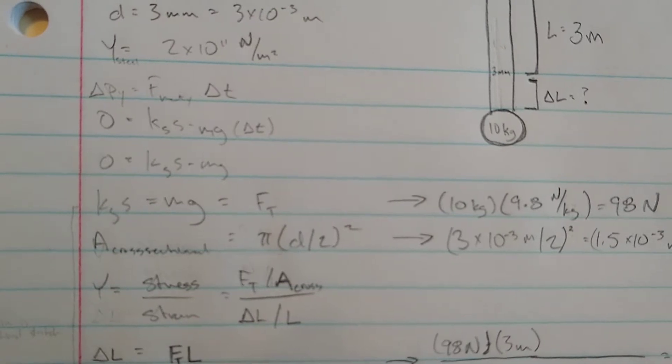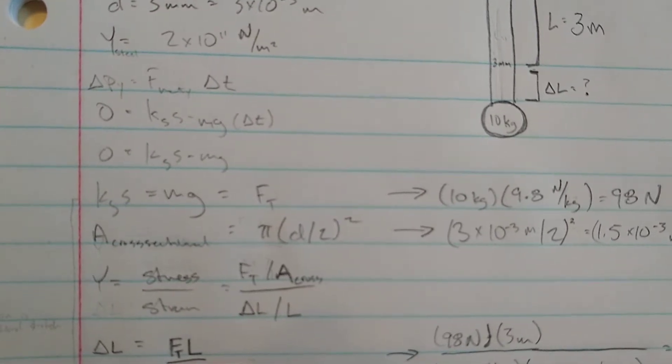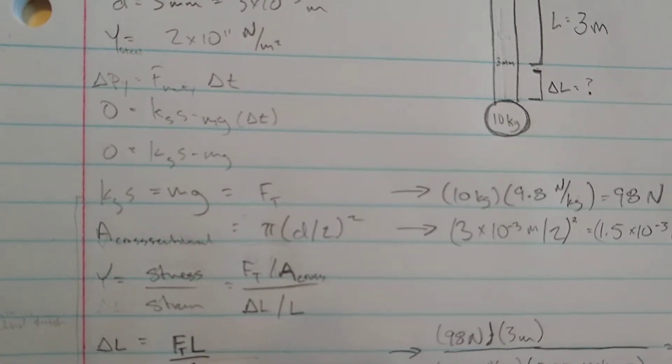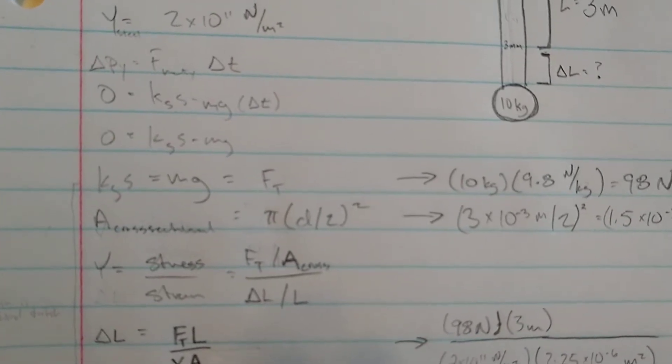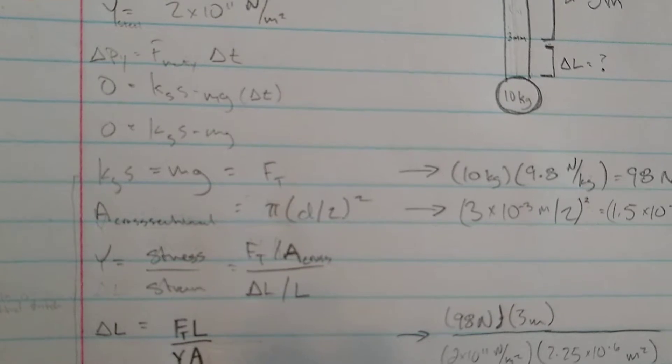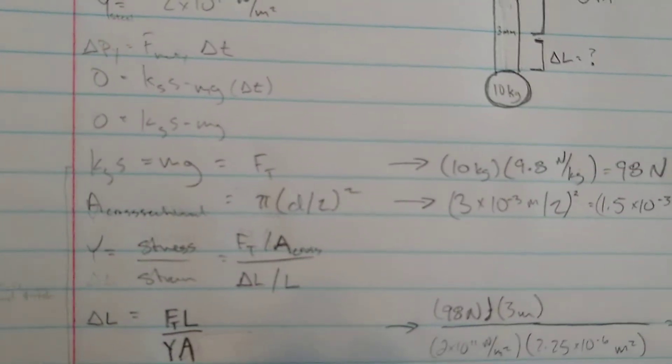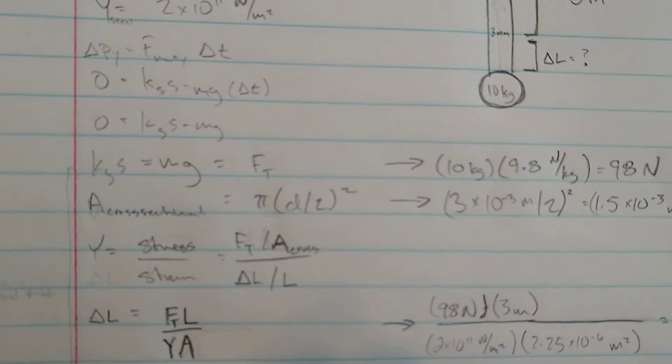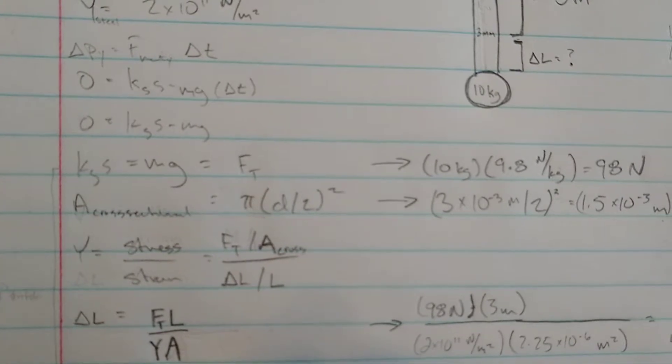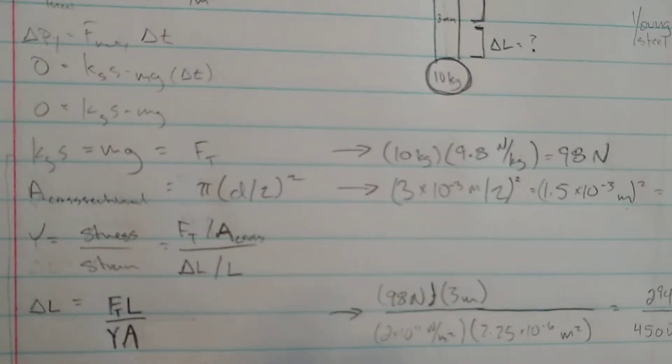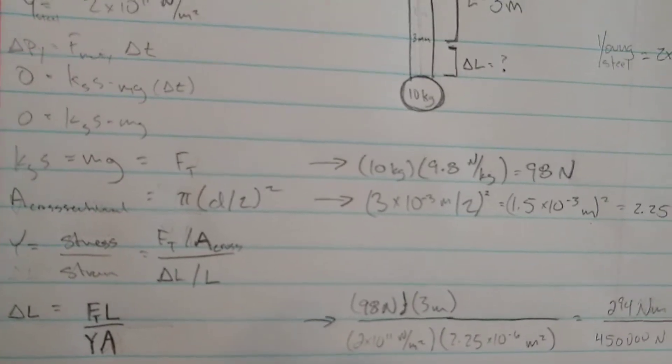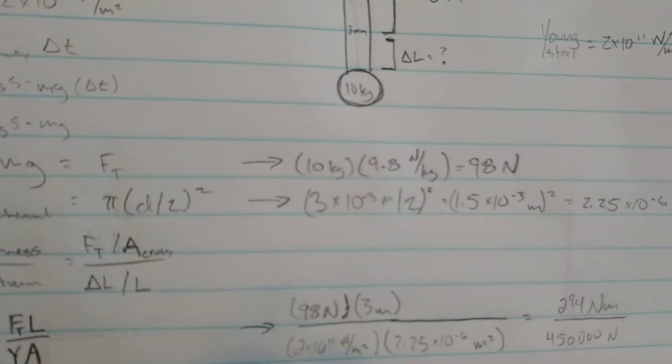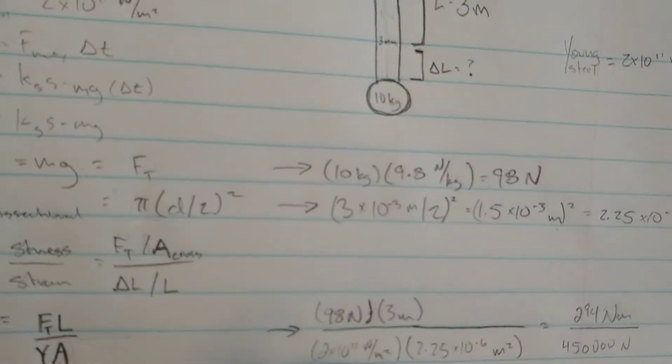And since it's not moving, time becomes irrelevant. We can just say that Ks equals mg, and we can use that for the force of tension. And since all we have is mass, and we know gravity, we're assuming this is on Earth, we can go ahead and find the force of tension, which we will need in Young's modulus. And it's going to end up being 98 newtons.